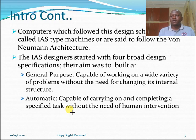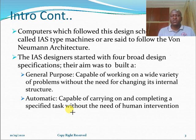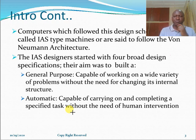Computers which follow the Von Neumann design scheme were called the IAS type machine, named after the Institute of Advanced Studies, or they can also be called the Von Neumann architecture. This group of scientists started with four broad design specifications or goals at the heart of their design. Their aim was to build a computer with certain features, and the number one requirement was that the computer had to be a general purpose computer.